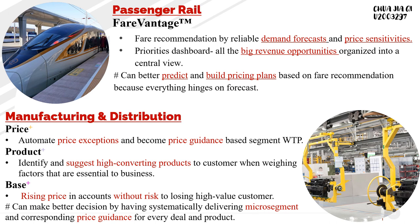Lastly, in the manufacturing and distribution sector, there are three products that help companies. First, the Price Plus software. It removes price exceptions and becomes price guidance based on segment willingness to pay. Second, the Product Plus software. It identifies and suggests high-converting products to customers when raising factors that are essential to the business. Third, the Best Plus software. Pricing in accounts reduces the risk of losing high-value customers by looking at the likelihood of conversion, so that managers can make better decisions by systematically delivering micro-segment and corresponding price guidance for every deal and product. That's all from me. Next, I will pass to Xiu Wei.